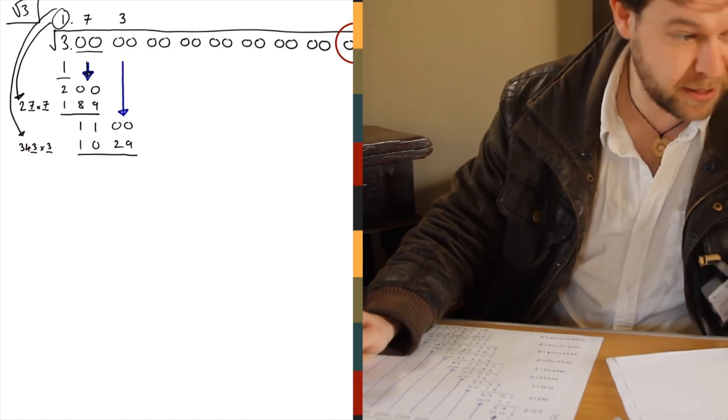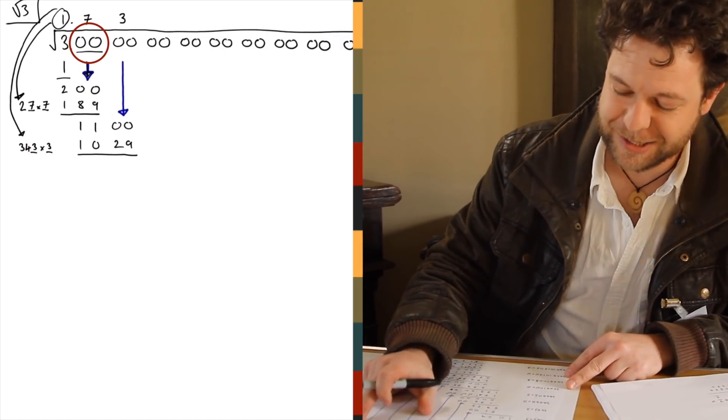We write out a bunch of decimal places beyond it, a little bit like long division, which these guys are doing lots of, but they go in pairs, so pairs of digits.